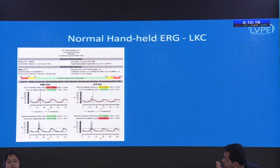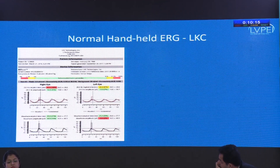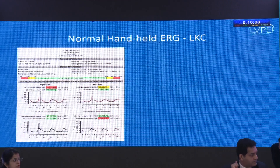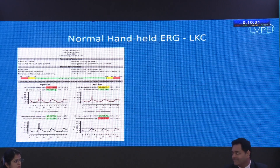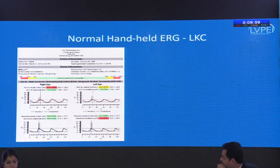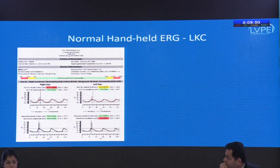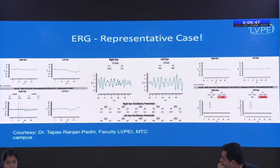It is important to understand how the machine gives its printout. For photopic responses, there is an inbuilt normative database for children of different ages. The green bar indicates the response is within the expected normal for the child's age; the yellow zone indicates borderline, roughly the 2.5th percentile of normal; and the red bar indicates it is abnormal. The B wave amplitudes and implicit times are given values — green means normal for that child, red means abnormal.